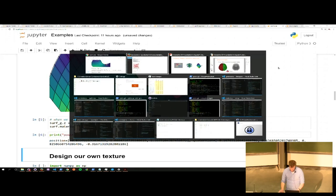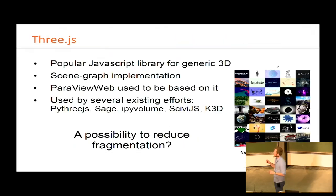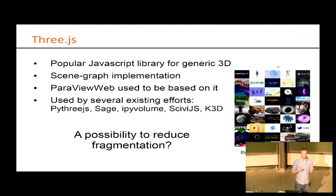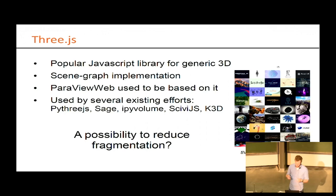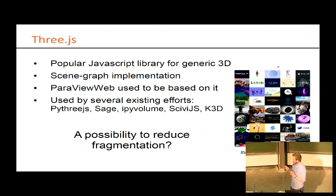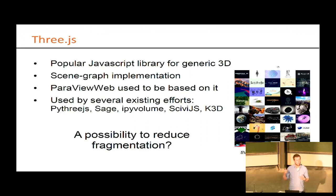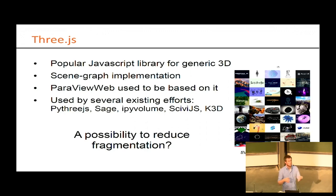I wanted to spend a little time mentioning Three.js. Looking at the dependency graph, a lot of these packages use Three.js. Three.js is a pretty popular and mature JavaScript library for doing 3D in the browser, based on WebGL. It's a scene graph implementation, meaning you have an object hierarchy so that if you rotate one object, its children rotate with it. ParaView web used to be based on this, though they're moving on. Several current existing efforts use it, so we figured PyThreeJS might be a way to reduce the fragmentation by binding things together at that level.